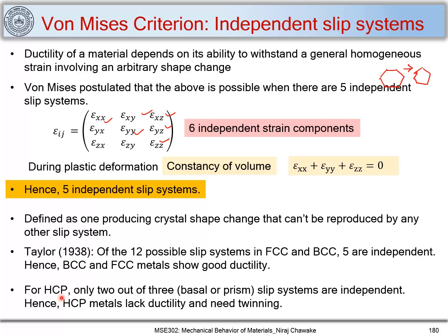In case of HCP, on a basal plane or a prismatic plane system, only two are independent out of the three slip systems. Thus HCP metals lack ductility and need twinning — we will be looking at the twinning mechanism as we go along. This is the reason why FCC and BCC show good ductility compared to HCP.